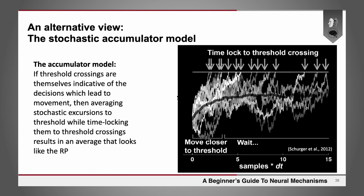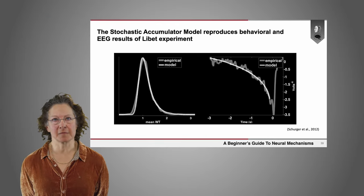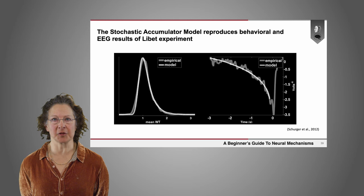Aaron Scherger and colleagues suggested that we could use a standard decision model — called a drift-to-bound, diffusion model, or stochastic accumulator model — to model what's going on in these RP experiments. What you postulate is that there is some variable evolving over time, and if that variable reaches a certain level — crosses a threshold — that's when the decision happens. If you take a bunch of threshold crossings indicative of decisions that lead to movement and average those stochastic excursions time-locked to the threshold crossings, what you get is something that looks a lot like the RP. Scherger showed that both the mean waiting time between trials and the shape of the RP were well reproduced by this accumulator model.